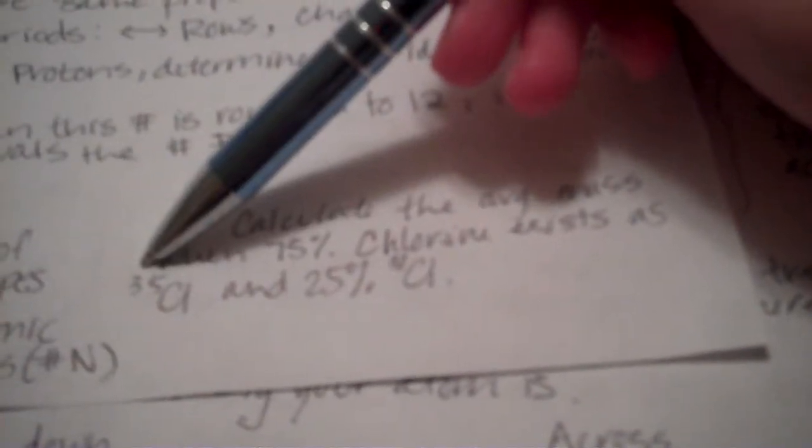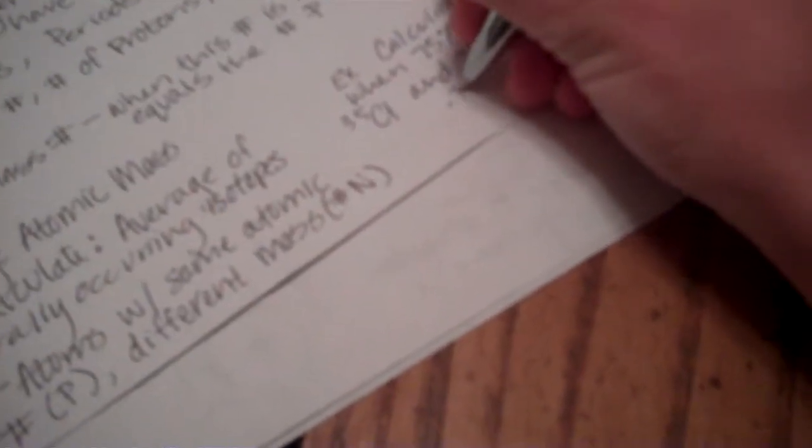Okay, so here's an example problem of something that, I don't know that you'll see anything like this, but you might see a variation that's a little bit harder. It says calculate the average atomic mass when 75% of chlorine exists as Cl-35, meaning the mass number, and 25% Cl-37. So, this is what you do. You're going to first step, convert percents into decimals. So, 0.75, 0.25.